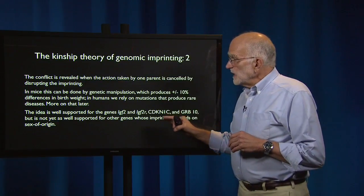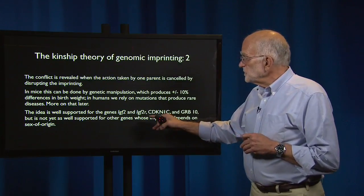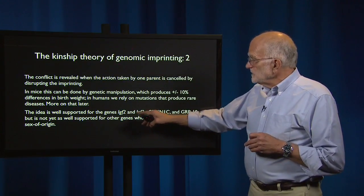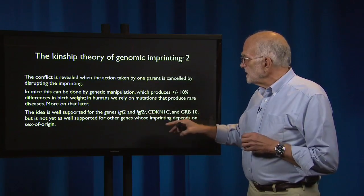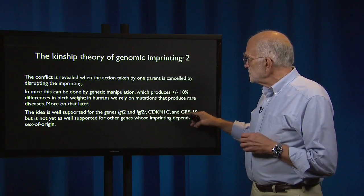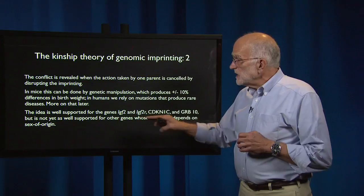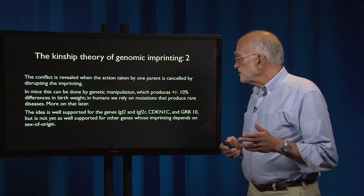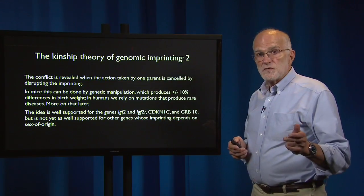The idea is well-supported for the genes IGF2 and IGF2R — insulin-like growth factor and its receptor — and CDKN1C and GRB10, but is not yet well-supported for other genes that are known to be imprinted by sex of origin.